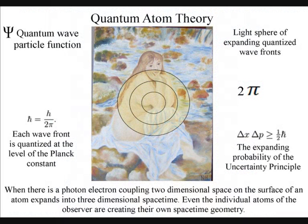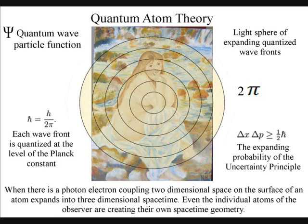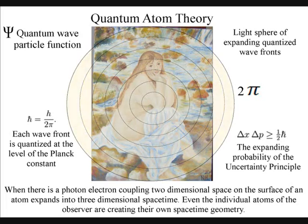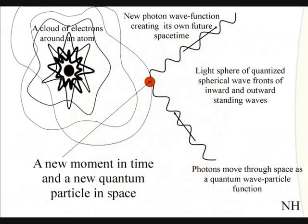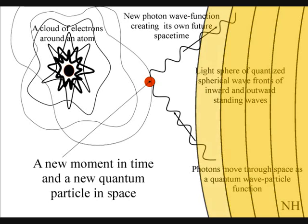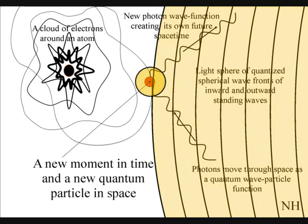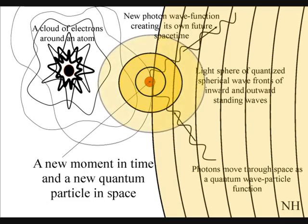Just like ripples on a pond, each atom will radiate out light spheres of quantized wavefronts. Each wavefront will create a probability of a future event. When a wavefront comes in contact with the electrons on the surface of another atom, it will create a new moment in time and space in the form of a photon-electron coupling.